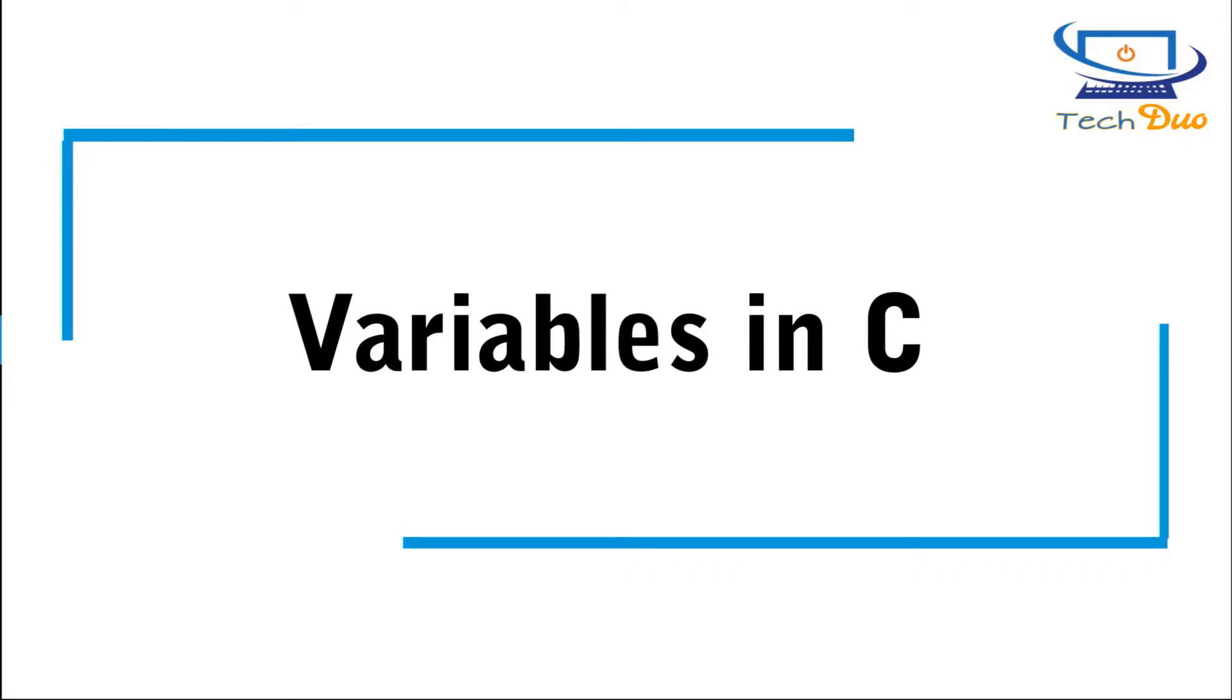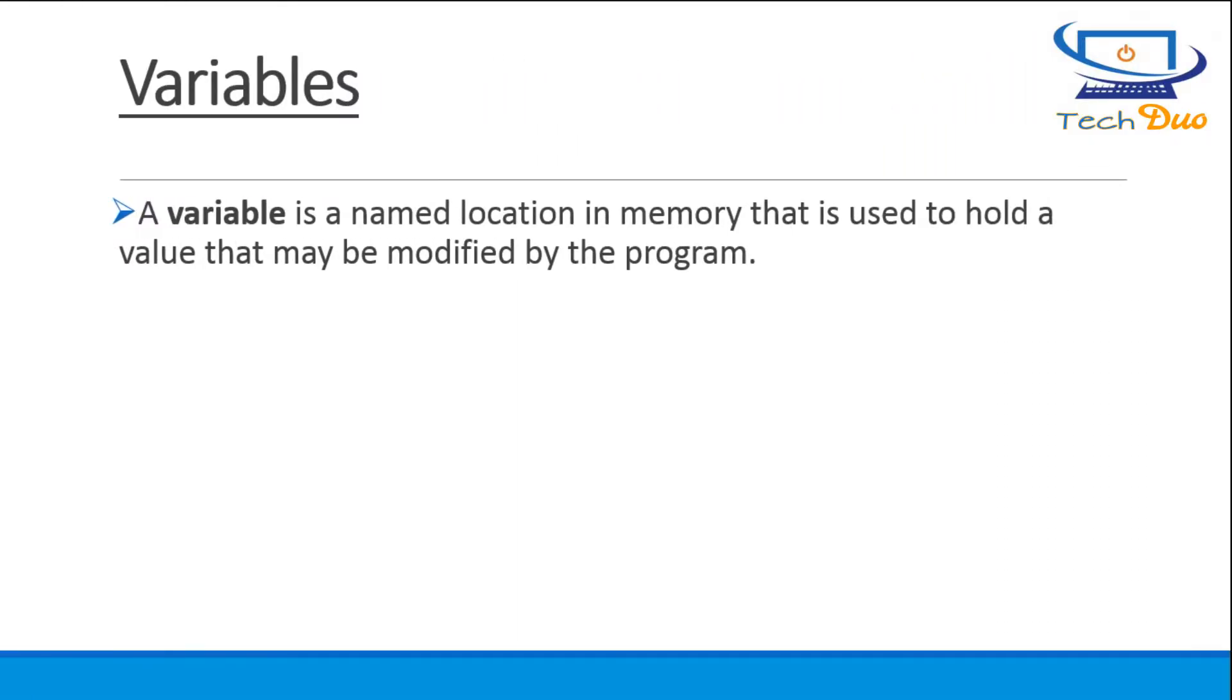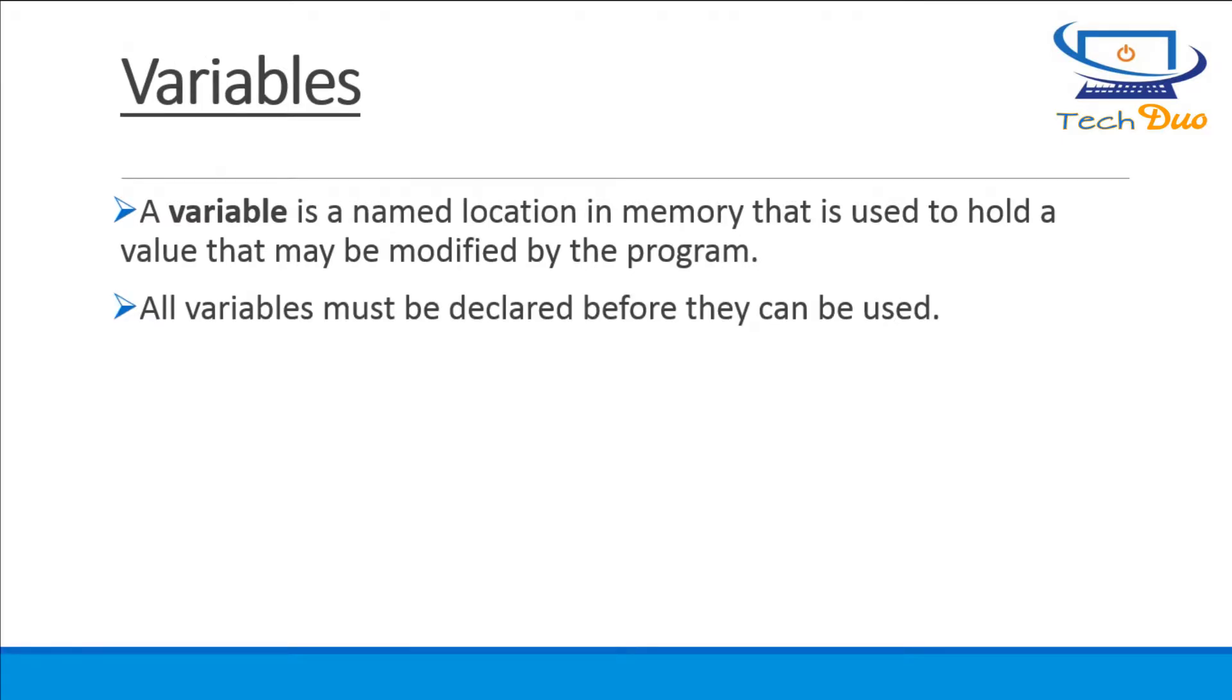Variables in C. A variable is a named location in memory that is used to hold a value that may be modified by the program. All variables must be declared before they can be used.